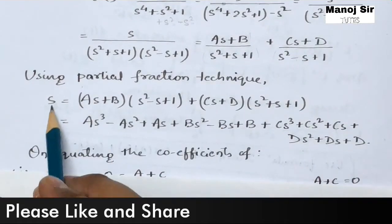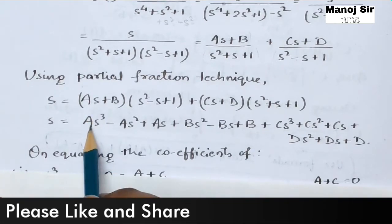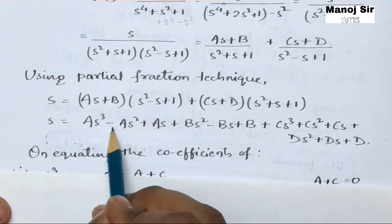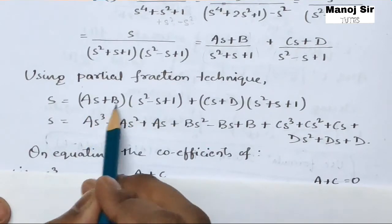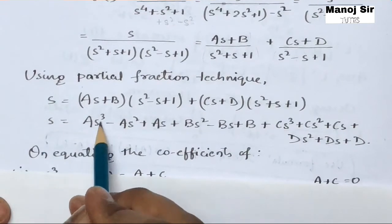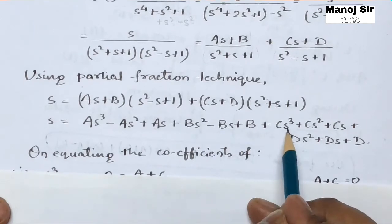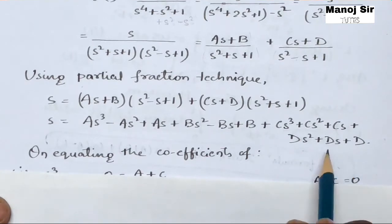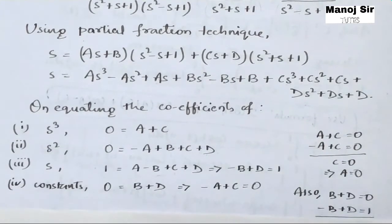Expanding the brackets: s = As³ − As² + As + Bs² − Bs + B + Cs³ + Cs² + Cs + Ds² + Ds + D. After expanding both brackets we group terms by powers of s to prepare for coefficient comparison.